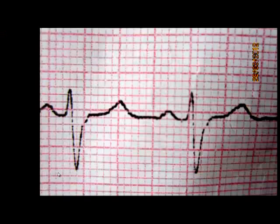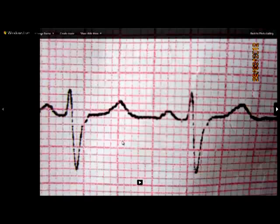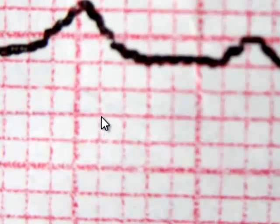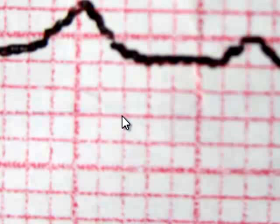On the ECG paper, we see two types of boxes, one small box, which is the square of 1 mm by 1 mm, this one.